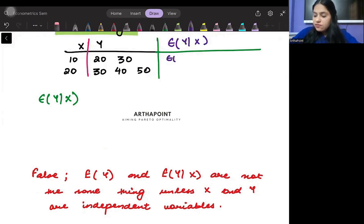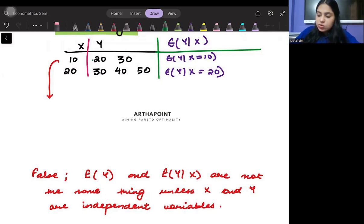Here it would mean E of Y given X is 10. And here it would mean E of Y given X is 20. Now, the question is what is the expected value of Y given X is 10? Given X is 10, which means I'm only looking into these two Y's. So for these two Y's, I will have 20 plus 30 by 2. That means it will be 50 by 2, which equals 25. So the expected value of Y will be 25 given X is 10.